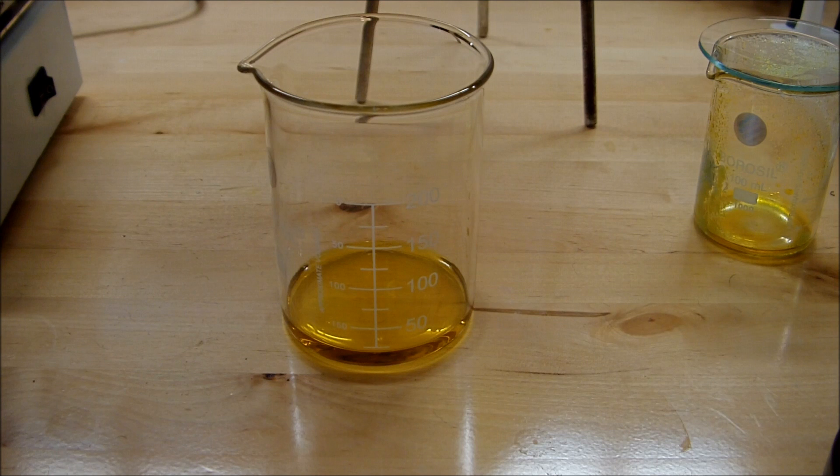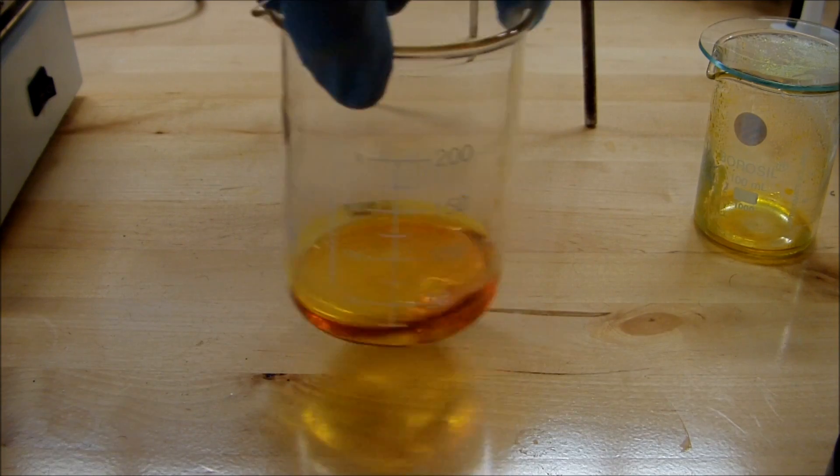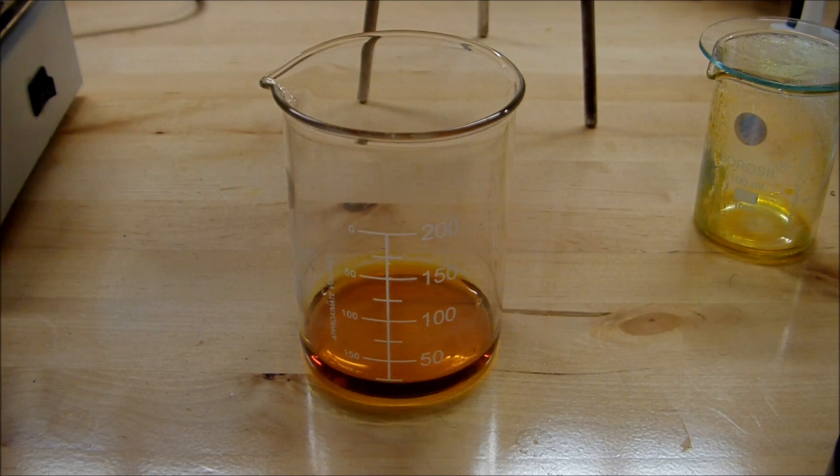Another way that you can speed up this conversion if you want to is by adding a little bit of hydrogen peroxide to introduce oxygen directly to the solution. And that's what I'm going to do right here. You can see it immediately begins to get even darker as iron 3 chloride is produced.